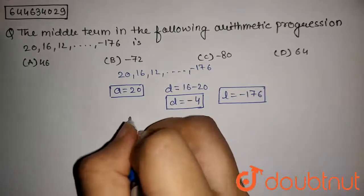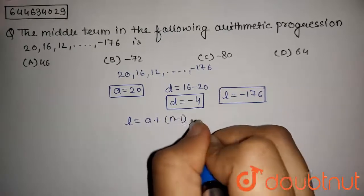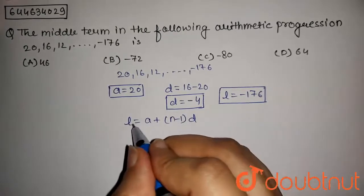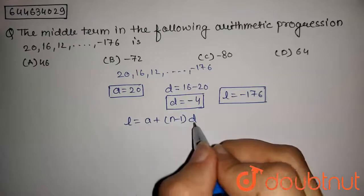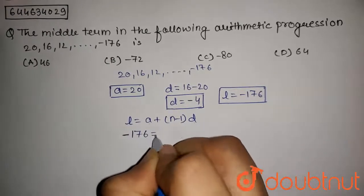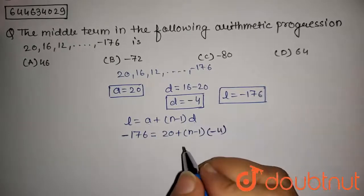So number of terms by the formula l = a + (n-1)d. Now putting value of l, a and d. So l is -176 = 20 + (n-1)(-4).